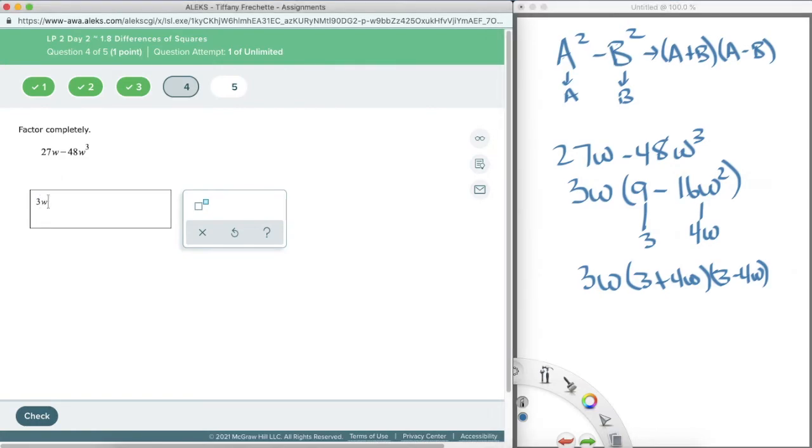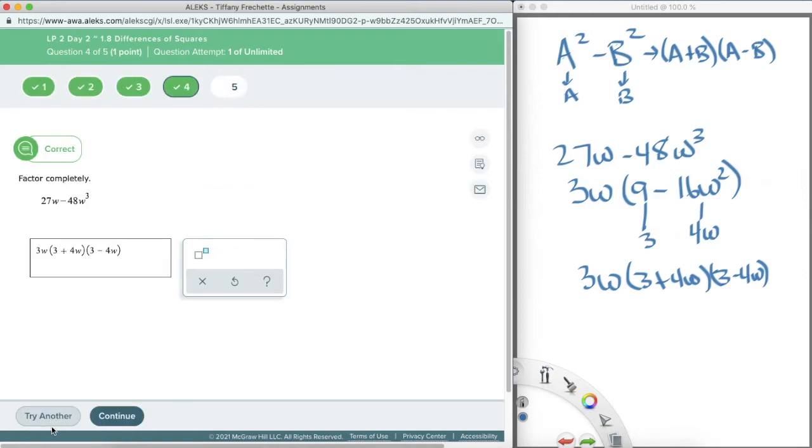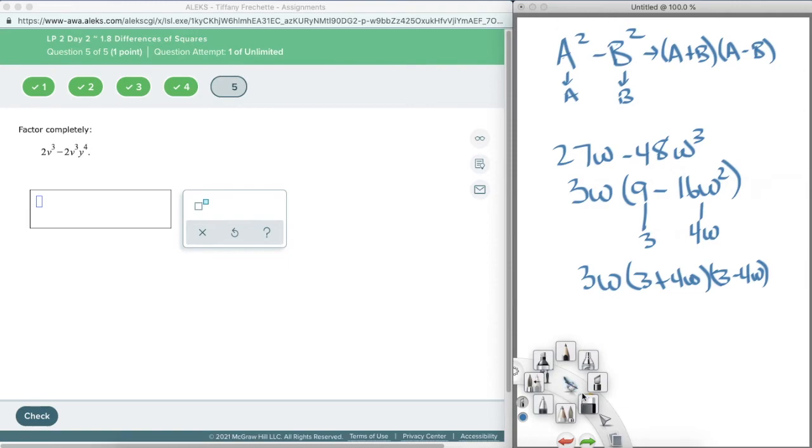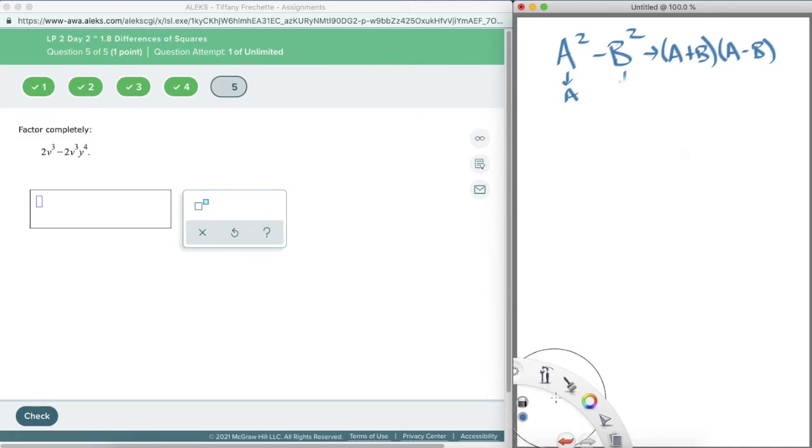So I have 3w and then I have 3 plus 4w. And 3 minus 4w. Perfect. One more. And we are all done with this one. I didn't miss. There we go. Oh, I'm going to erase part of my pattern up there, but that's alright.